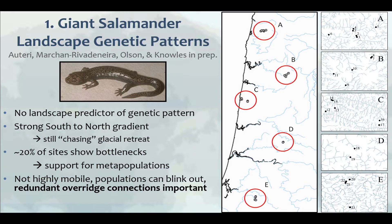First, we're not seeing any land cover type predictors of dispersal for this species. For example, forest cover does not seem related to the genetics of this animal. You can do circuit theory — electrical circuit analysis — to see how genes are flowing through the landscape. We're not seeing any landscape predictors of giant salamander movement, but we did see a pretty strong south-to-north signature in the genetics, suggesting this animal is not moving very fast and is still chasing the glacial retreat from thousands of years ago. As you go north there's less and less genetic heterogeneity — a founder effect still visible in northern populations. The lesson is these animals are moving but very slowly, so making persistent habitat across the landscape is a key consideration.